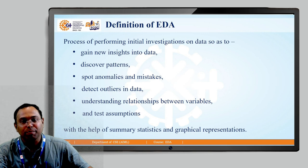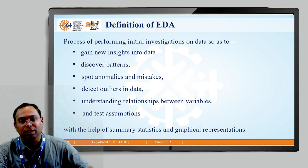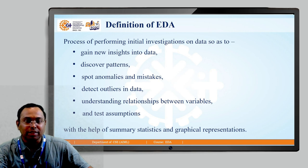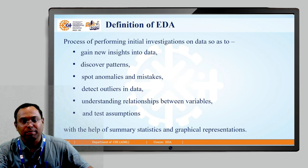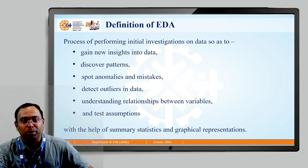The next point is understanding the relationship between variables. There are variables in a data set which can have a direct or indirect proportion with each other. When variable A increases, variable B also increases, and when variable A decreases, variable B also decreases — these are variables having a direct relationship. On the vice versa situation, when variable A decreases, variable B increases and vice versa — this is an example of inverse proportion. When we have data in a data set we need to figure out these relationships, and it is quite possible with exploratory data analysis techniques to find them.